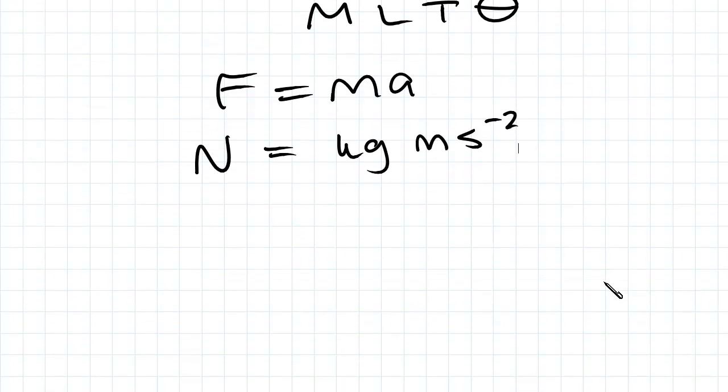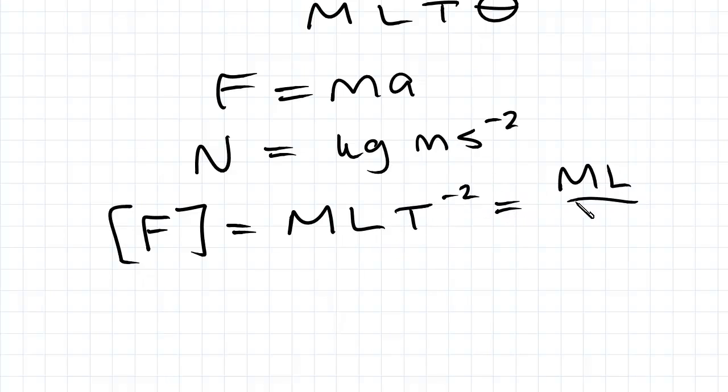So to find the dimensions of this, we write F between two square brackets to inform that we're finding the dimensions of force. The dimensions of kilograms is mass, dimensions of metres is length, and of seconds is time to the minus two. So the answer would be ML on T squared. And we'll see more on that in the topic on dimensional analysis.